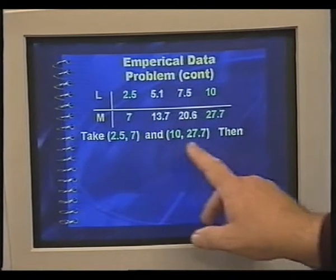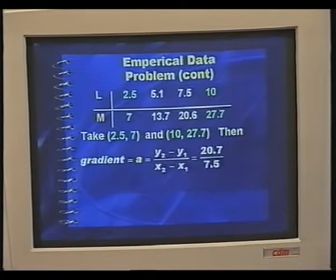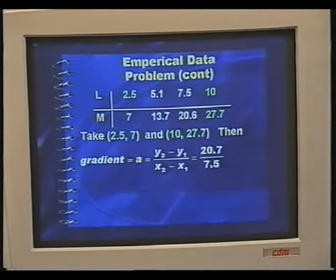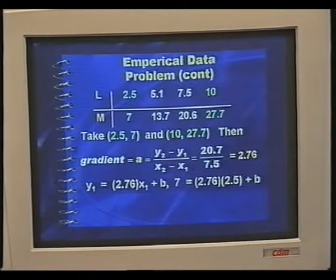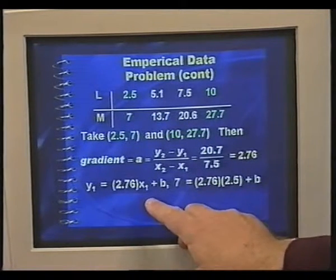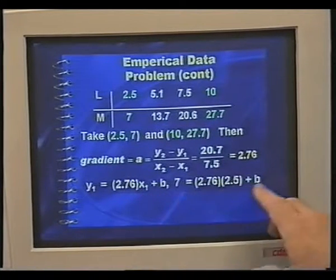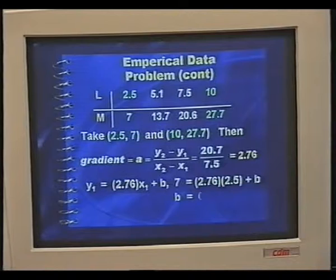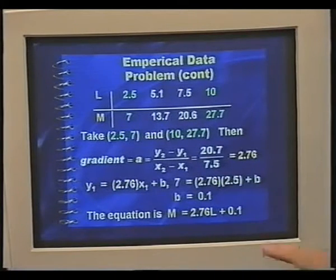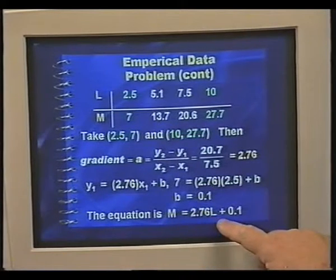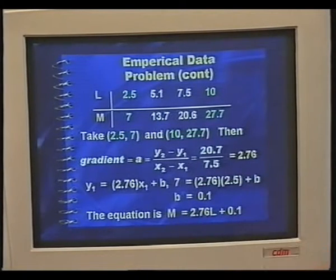Those points are approximately on the line. We use the formula for the gradient: the difference in the y's becomes 20.7, the difference in the x's is 7.5, giving 2.76 when divided. Then we substitute that into the equation y₁ = mx₁ + b to get the value for b, which comes to 0.1. This enables us to write the equation m = 2.76l + 0.1.